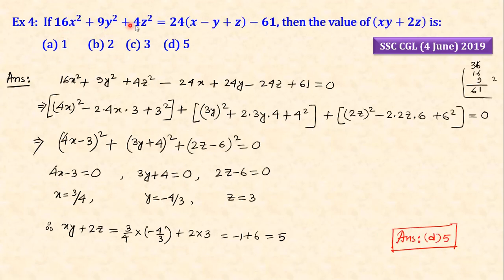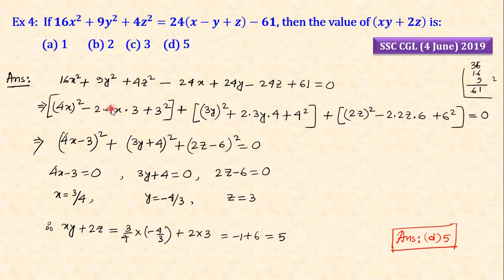Next: if 16x² plus 9y² plus 4z² equals this expression, find the value. We can rearrange: 16x² means (4x)², minus 2ab equals 24, so 2 into 4x equals 24 and that equals 3. Similarly, 9 equals 3², plus 2 into 3y into 4. And z equals (2z)² minus 2 into 2z into 6.